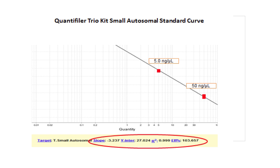Now, do you see the quality metrics at the bottom of the screen? Let's review slope, y-intercept, and r-squared.